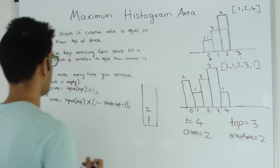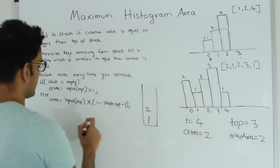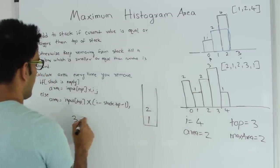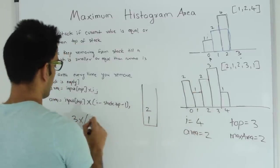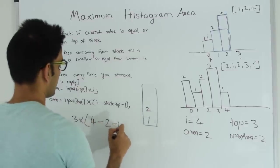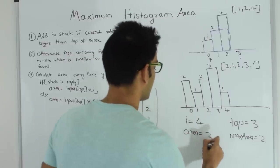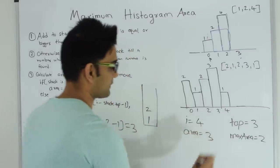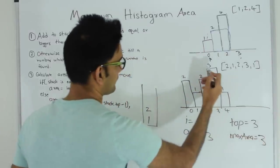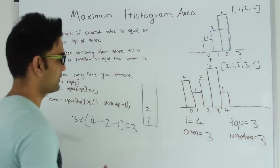Since the stack is not empty, area = input[top] × (i − stack_top − 1) = input[3] × (4 − 1 − 1) = 3 × (4 − 2 − 1) = 3. My new area becomes 3, and since area is greater than max area, max area also becomes 3. It's clear that the bar of height 3 is contributing 3 to the area.